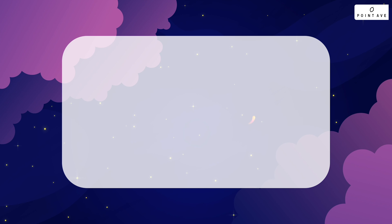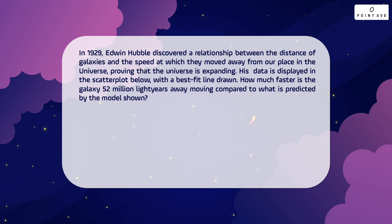We have one more problem type to look at, but this one is much easier than the previous one. In 1929 Edwin Hubble discovered a relationship between the distance of galaxies and the speed at which they moved away, proving the universe is expanding. His data is displayed with a best fit line drawn. The question asks: how much faster is the galaxy 52 million light years away moving compared to what is predicted by the model? This type of question is surprisingly common on the SAT, but fortunately it's really straightforward — just find the data point and the best fit line value and find the difference.